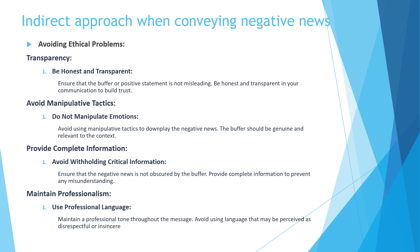The third step is to avoid withholding critical information — make sure the negative news is not obscured by the buffer and provide complete information to prevent misunderstandings. For example: 'While we value your participation in the committee, we regret to inform you that your proposal has not been selected for funding due to budget cuts affecting all projects.' This is clear and straightforward about the reason for rejection. The fourth step is to use professional language — maintain a respectful and sincere tone throughout the message. For example: 'I appreciate your contributions to the team, but unfortunately we must postpone the launch due to regulatory compliance issues.'